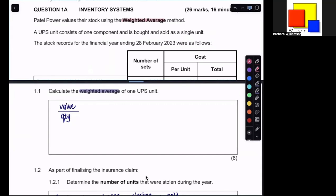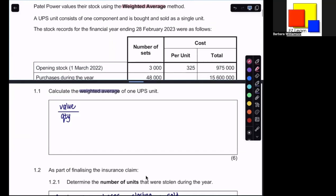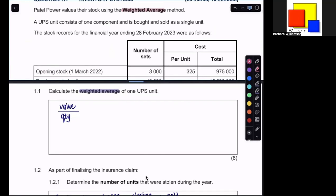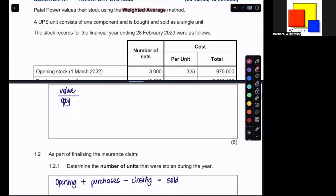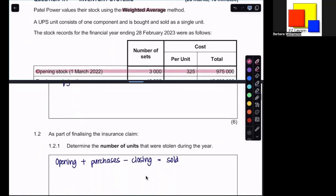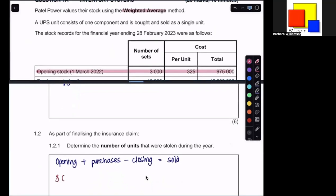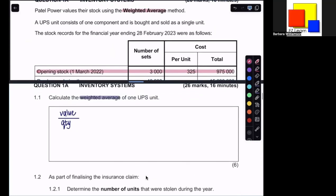A UPS unit consists of one component and is bought and sold as a single unit. The stock records for the financial year ending the 28th of February were as follows. So now this is where we're going to start pulling our information to work out our weighted average, as well as working out how many units were actually stolen. We can see to start off with, we've got an opening stock of 3,000 sets. The fact that we had 3,000 units on hand, we can immediately use over here in determining the number of units. We know that the total value was 975,000, so we can put that at the top of our calculation of weighted average, and at the same time, put your number of units at the bottom.